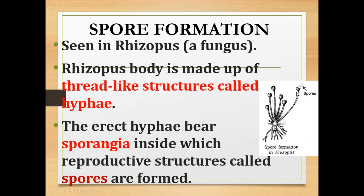Inside the sporangia there is a reproductive structure called spores. These spores will reproduce and form a new organism in the case of Rhizopus. The erect hyphae consist of sporangia, and inside the sporangia the spores are produced which will reproduce to form a new organism.